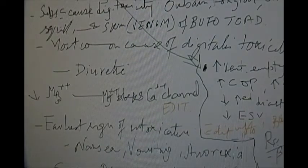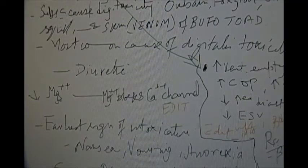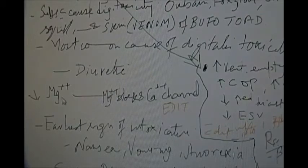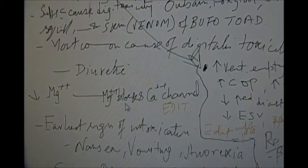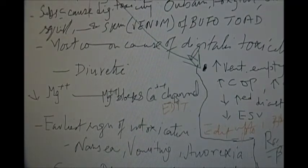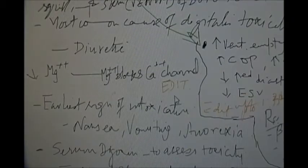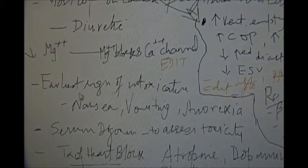How does hypomagnesemia increase digitalis toxicity? The magnesium blocks the calcium channel, thereby increasing the digitalis toxicity.